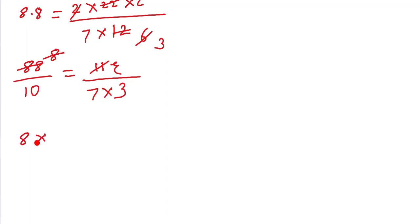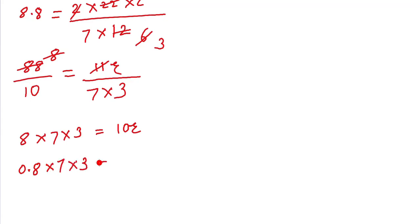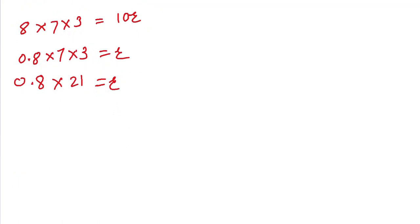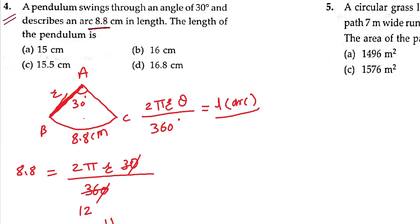Multiplying through: 8 × 7 × 3 equals r × 10. So r = (8 × 7 × 3) / 10. That gives us 0.8 × 21 = r, which equals 16.8. So option number D — length of pendulum is 16.8 cm.